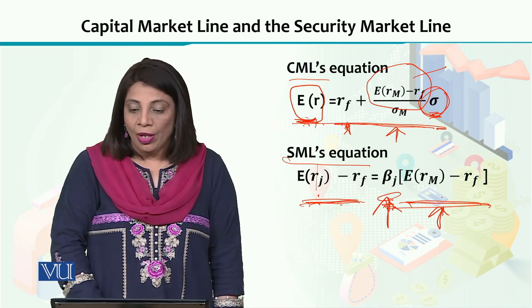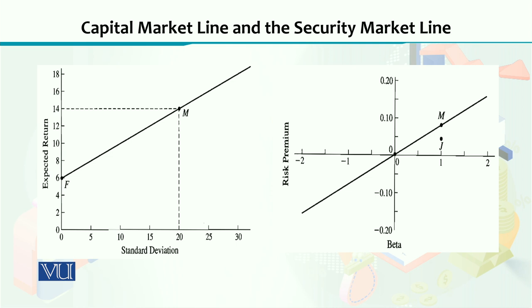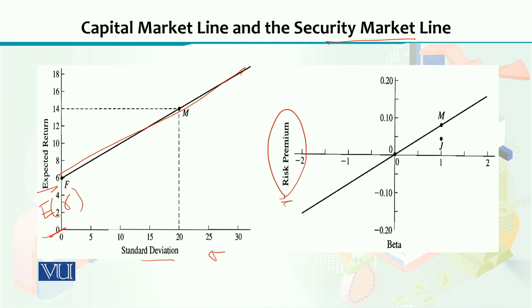Looking at the diagram, on the left side you can see the capital market line — the expected market return is on the vertical axis and sigma (standard deviation) is on the horizontal axis. On the other hand, for the security market line, you take risk premium on the vertical axis — not expected return — and beta values on the horizontal axis. Because there is no intercept term, the security market line passes through the origin.